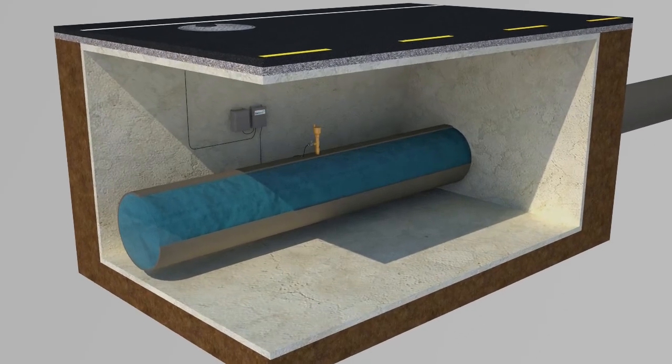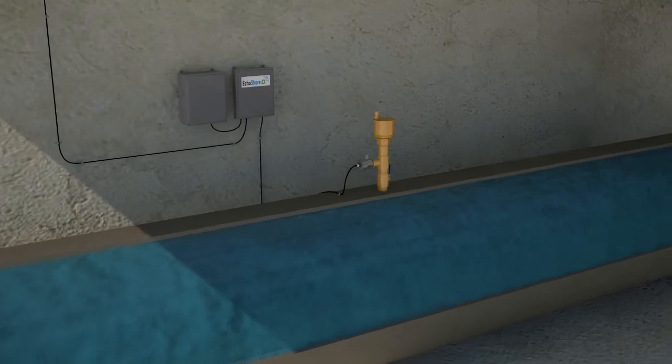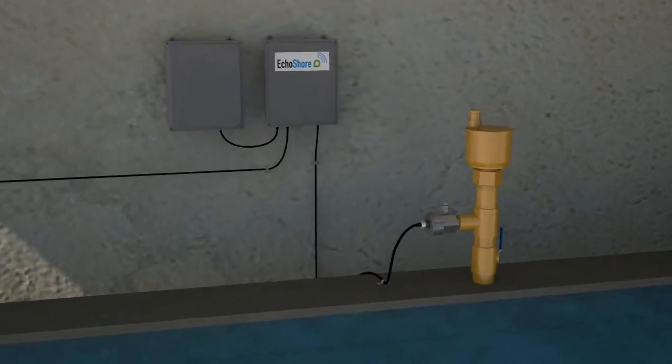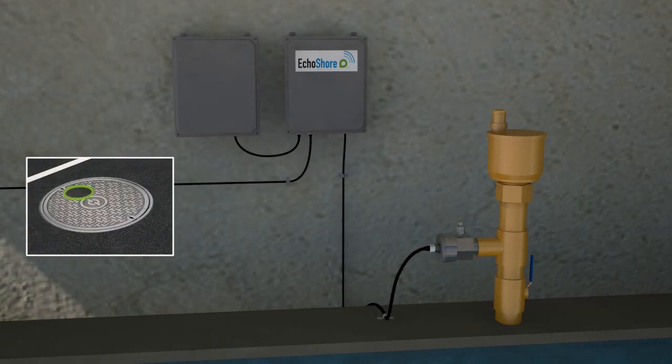At the heart of the platform is a node, which is typically installed underground in an access chamber or any other location with secure access to the main. A node is self-contained and consists of a data processor, communication hardware, battery power source, hydrophone, and a durable antenna.